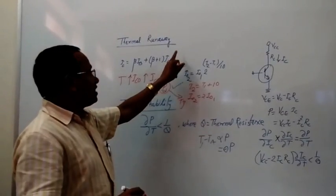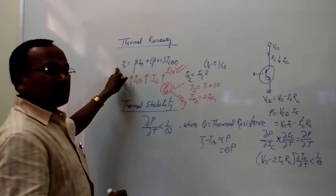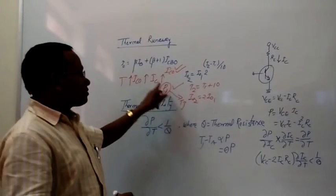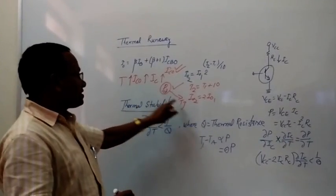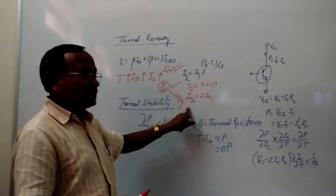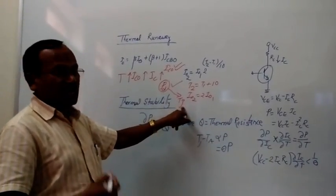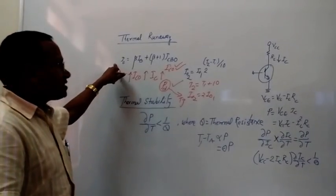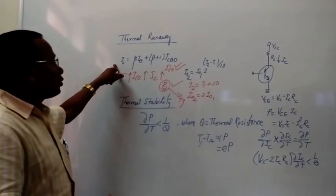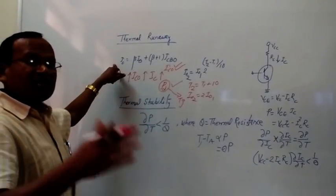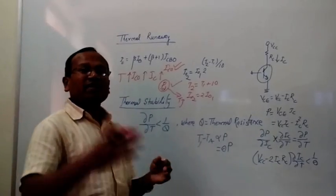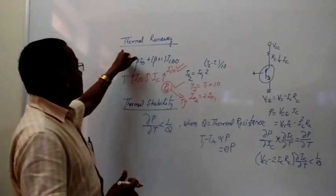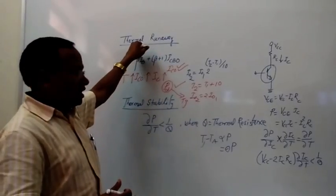Whenever junction temperature increases, it will again increase ICBO, which again increases IC, which again increases power dissipation, which further increases junction temperature — and so the cycle continues. Collector current is simply increasing with the increase in temperature, and therefore we call this process thermal runaway.